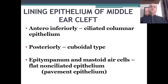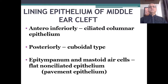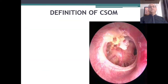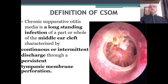The lining epithelium of the middle ear cleft is not the same in all parts. Anteroinferiorly it is ciliated columnar epithelium, and this is the part mostly affected in the Tubotympanic type. Posteriorly it is cuboidal, and in the mastoid air cell system it is a pavement epithelium — flat non-ciliated epithelium. This posterosuperior part of the middle ear cleft is usually involved in the Atticoantral type.